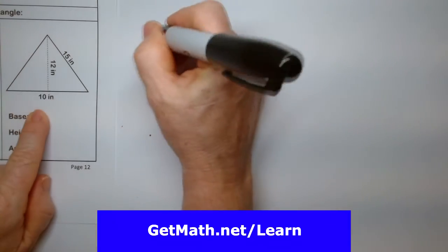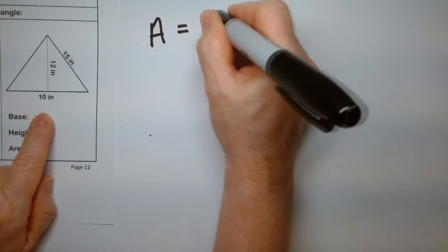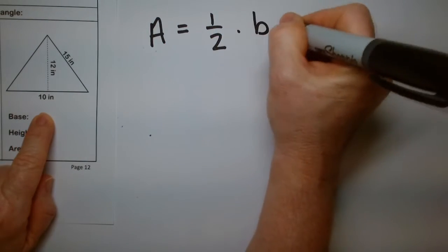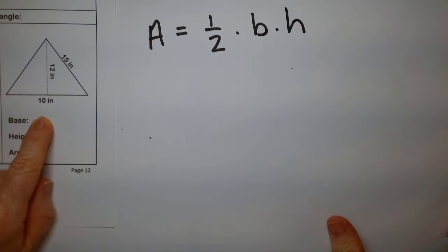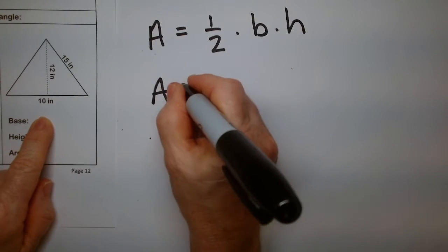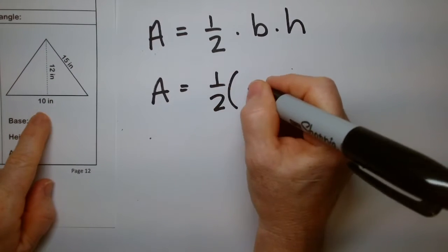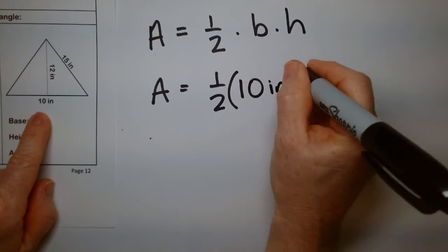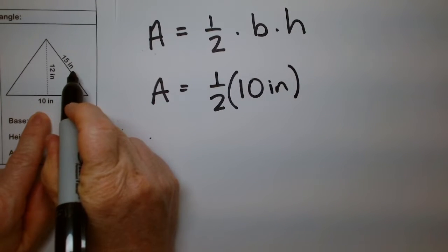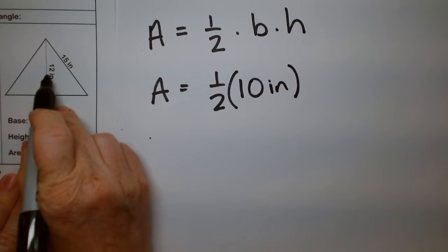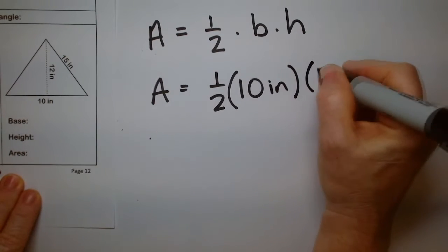So let's find the area of this triangle. It's one half times the base times the height. And the base is 10 inches. The height is not 15 because that doesn't come straight up from the base. The height is 12 inches. So we write a 12 here.